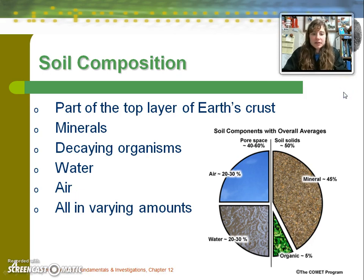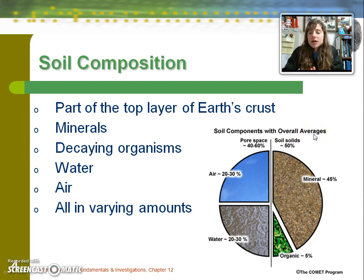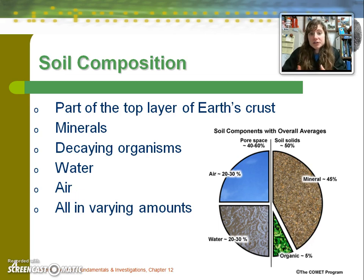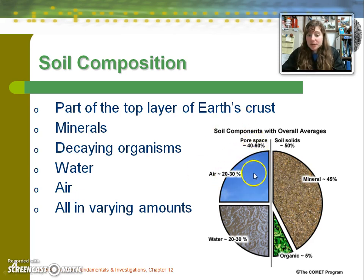The composition of soil can be evaluated based on its mineral content. On average — and soils do differ — about 45% of content by volume is minerals, including calcium and phosphorus. There is also about 20 to 30% within the pore space of soil constituting air, 20 to 30% water, and then just about 5% being organic matter, things that come from other living things.